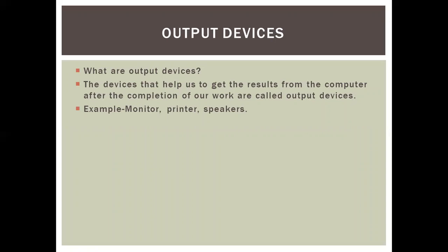Output devices — examples that are given are monitor, printer, and speaker. Now the monitor gives you a visual form, meaning you can see what you have typed on the computer. Suppose if I type letters A to Z, I can see all those on my screen, and that is why the monitor gives me the visual form of the work that I have done.